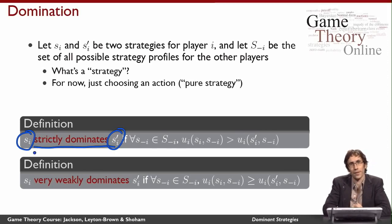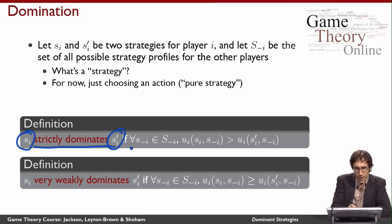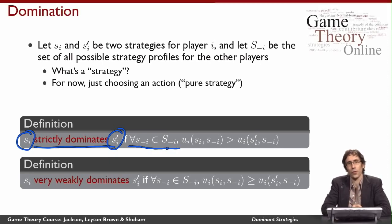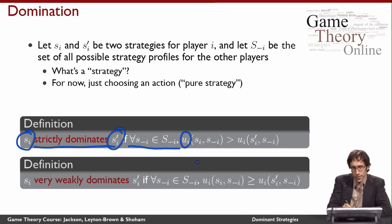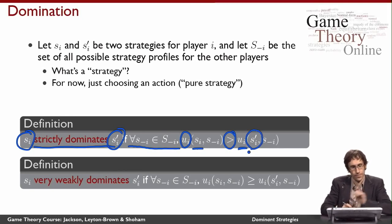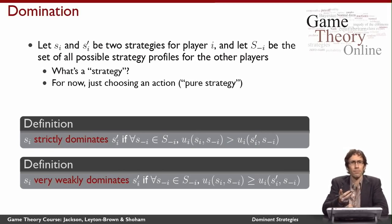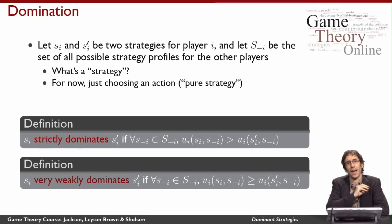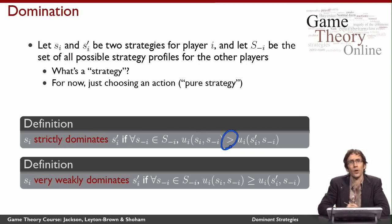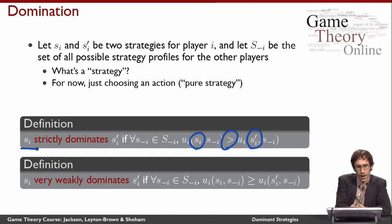First we have the notion of strict dominance. si strictly dominates si prime if, for every other strategy profile of the other agents — in other words, for every other joint set of actions they could take — the utility that player i gets when he plays si is strictly more than the utility he gets when he plays si prime. So it might matter to player i what everybody else does, but it will always be the case that he's strictly happier playing si than si prime. That means si strictly dominates si prime.